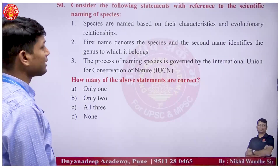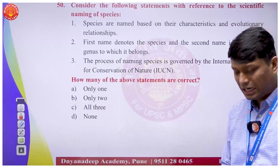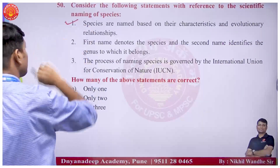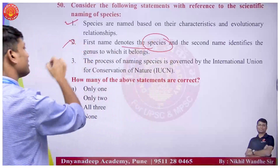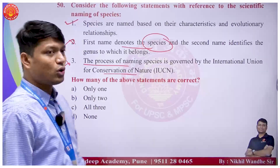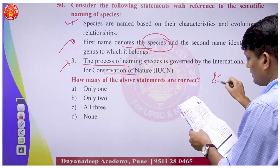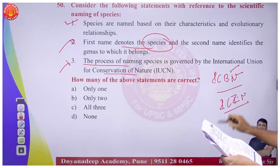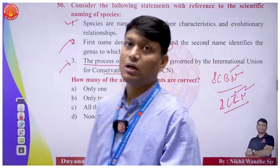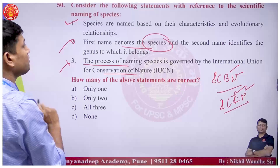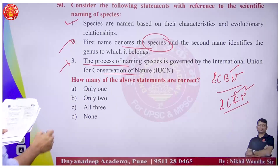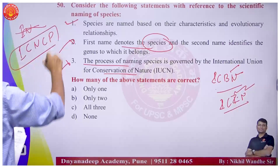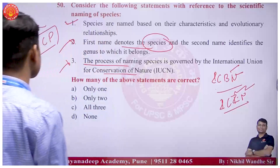Question on scientific naming of species: species are named based on their characteristics and evolutionary relationships - this is correct. The first name denotes the species is incorrect - the first name denotes the genus. For naming, there are two organizations: ICBN for botanical naming and ICZN for zoological naming. For cultivated species, there is ICNCP. International conventions handle this naming - not IUCN.